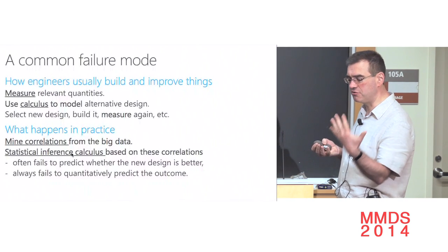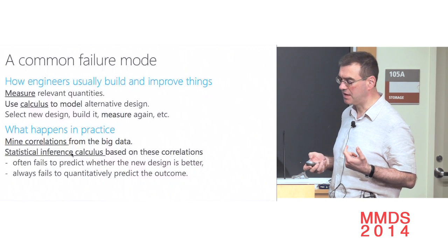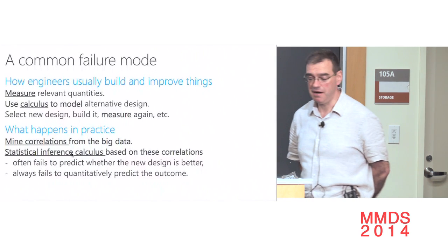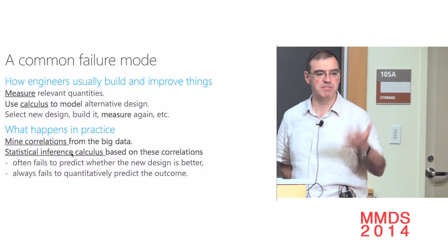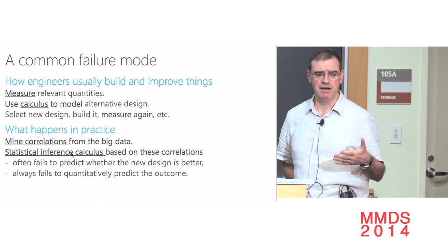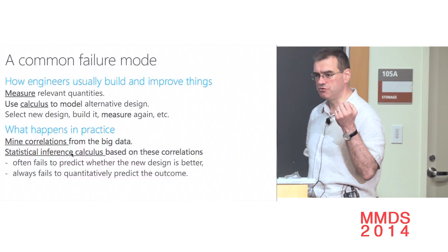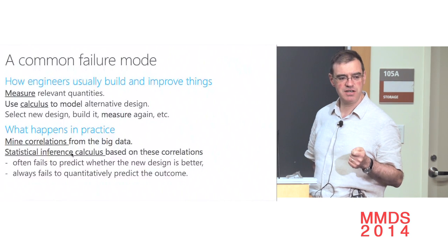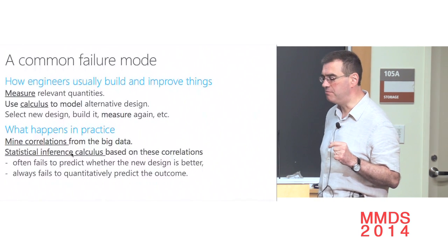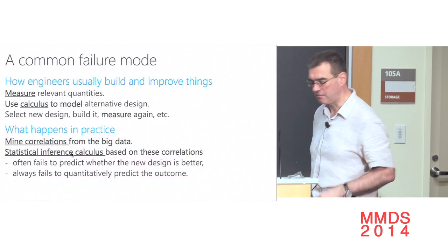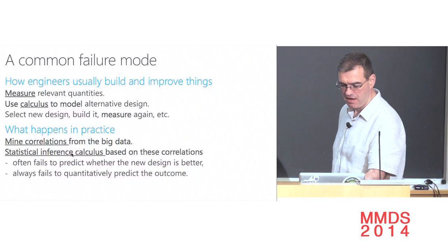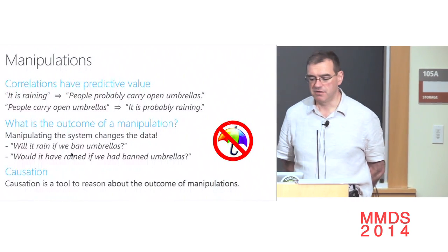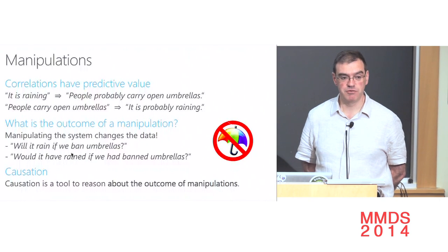It's a combination of accurate modeling and pragmatism. If you look at a system like this, the approach of mining correlations in big data and doing statistical inference by applying Bayes rules doesn't work well — not only does it fail to give a good quantitative result about what would happen if you make a particular change, it even fails to tell you whether a particular change is good or bad.